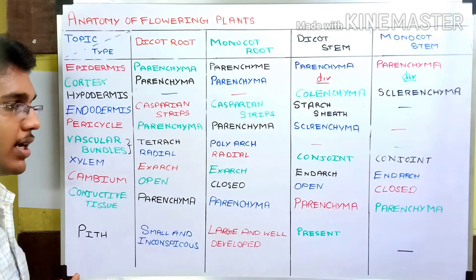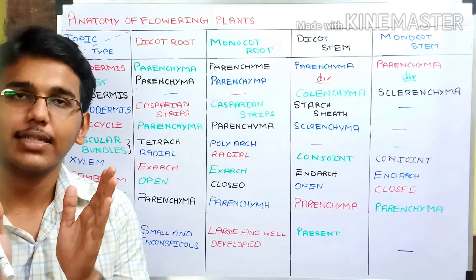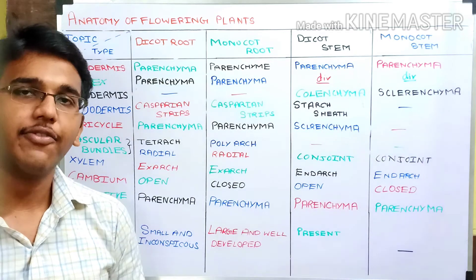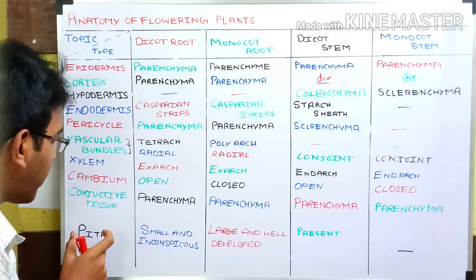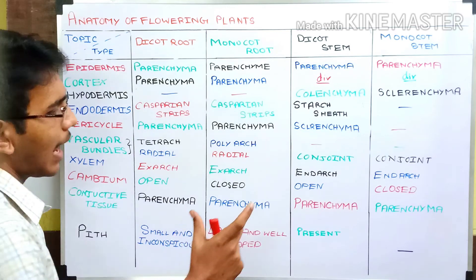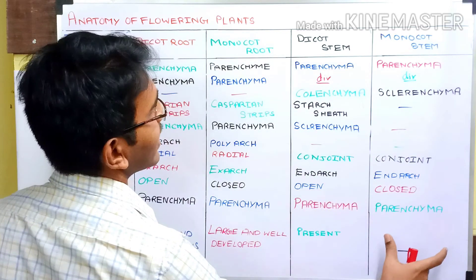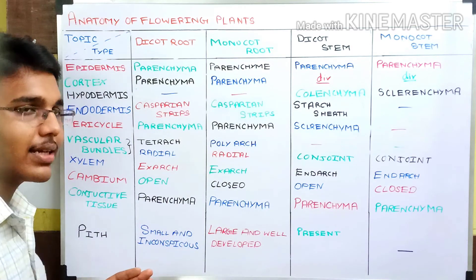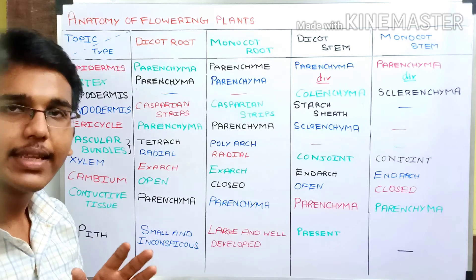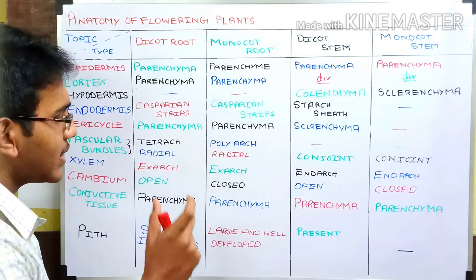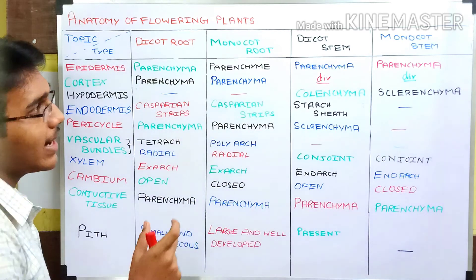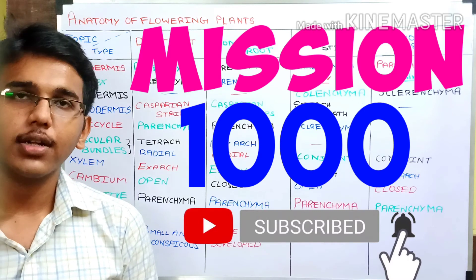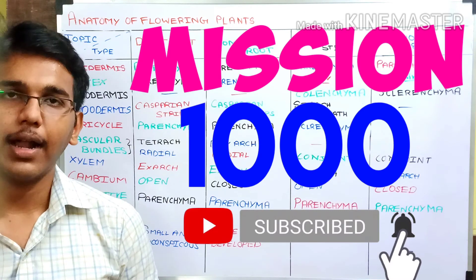Conjunctive tissue is a set of parenchymatous tissue present between the xylem and phloem in the vascular bundles. Finally, the innermost part is the pith, mostly made up of parenchymatous tissue. The pith is small and inconspicuous in dicot root, large and well developed in monocot root, present in dicot stem, and absent or indistinguishable in monocot stem.